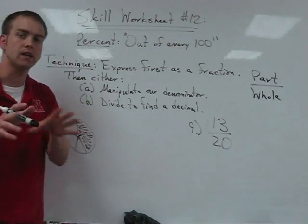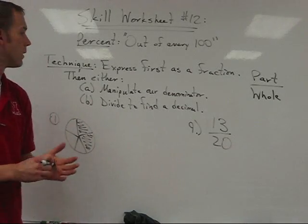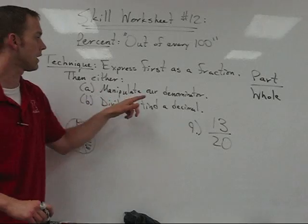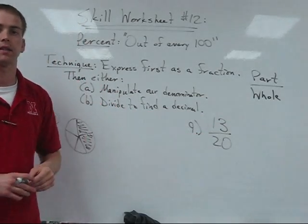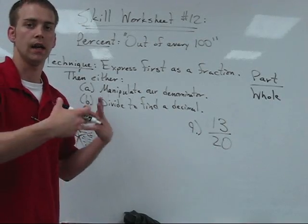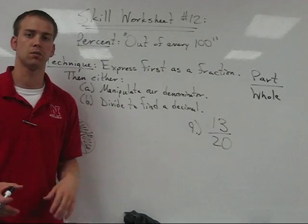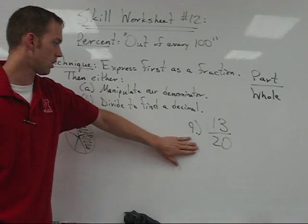Our technique will have two techniques. You're going to have to decide which one works best in each situation. One consists of manipulating our denominator to be 100. The other way would be to divide to find a decimal, and I'll show you that on number nine.